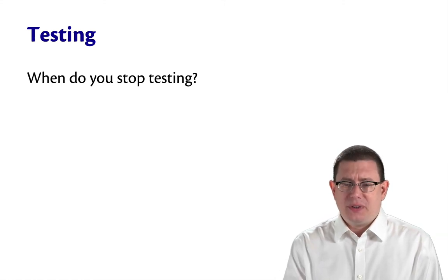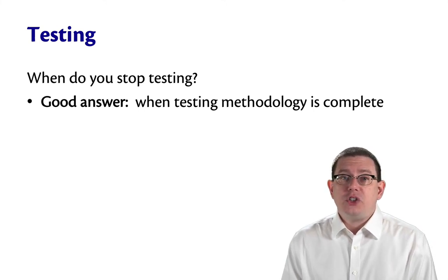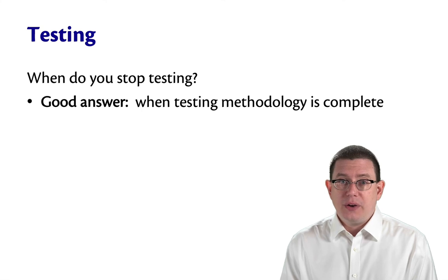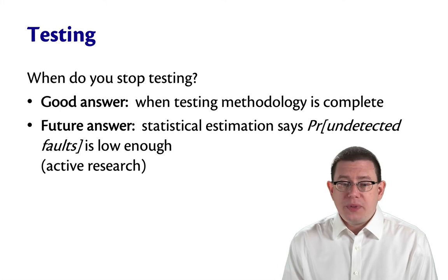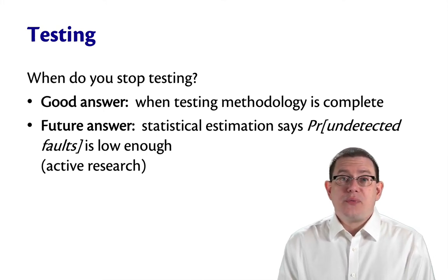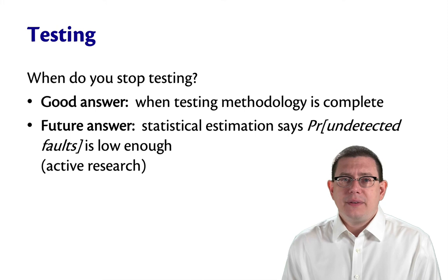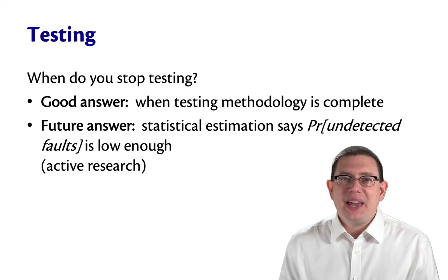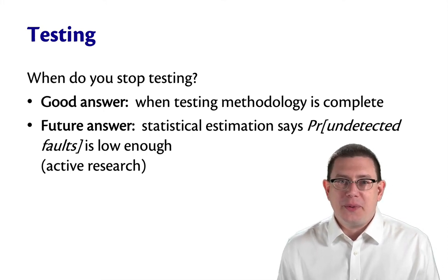So what are some good answers? One good answer is that you are following a testing methodology and that methodology has been completed. We're going to talk about two different types of testing soon to learn more about that. In the future, we hope that there will eventually be enough research completed on software engineering that we can do statistical estimation — we'd like to know that the probability of undetected faults is actually low enough. We don't really know how to do that yet, but people are working on it. Perhaps one day I'll be able to cite one of you and you'll have solved this problem for us.